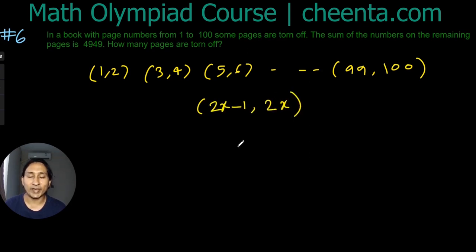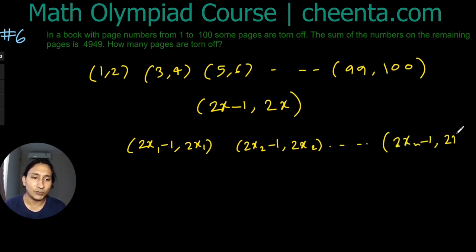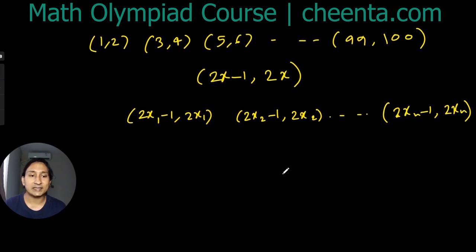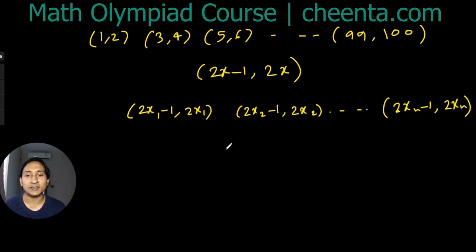Suppose we are removing n pages which are 2x₁ - 1, 2x₁, 2x₂ - 1, 2x₂, like that, till 2xₙ - 1, 2xₙ. The sum of the numbers removed is therefore 4x₁ - 1 plus 4x₂ - 1 plus dot dot dot plus 4xₙ - 1.